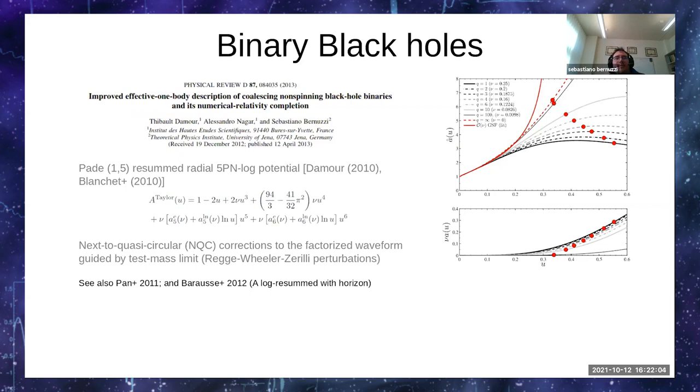Let me now switch to binary black holes. As described by Alessandra, the story starts much earlier, but this was my first work with Thibault, so I'll start from here. A main element introduced in this work was the use of a ρ function to resum the 5PN radial potential with log terms that exploited at the time very new post-Newtonian results, and since then it's our standard choice. This plot here shows the behavior of this function for different values of the mass ratio that holds from the comparable to the large mass ratio regime.